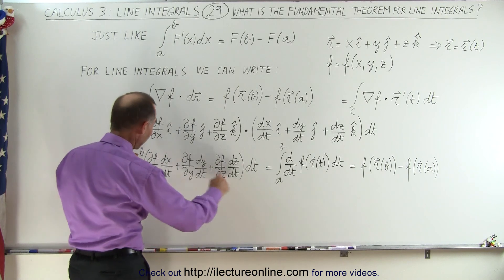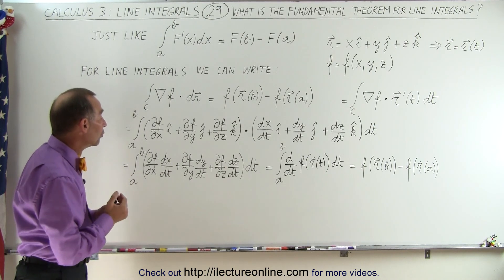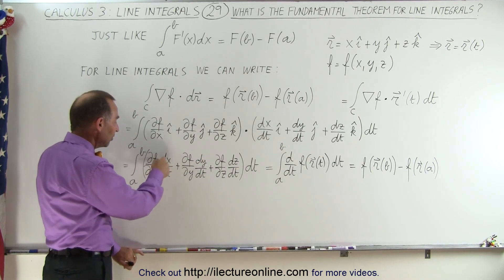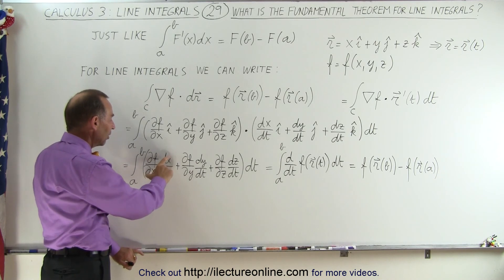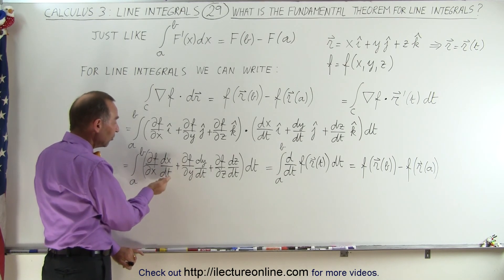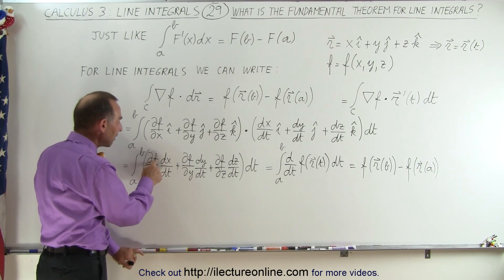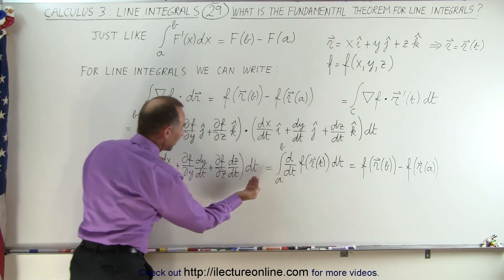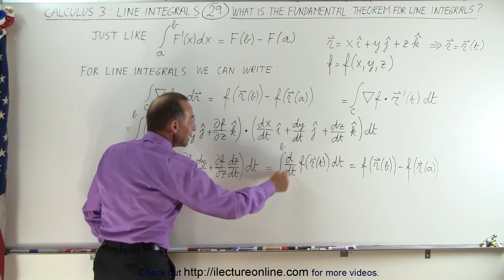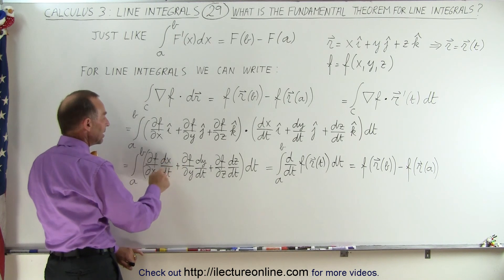What we don't want to do yet is cancel out the dt's, because that would defeat the purpose. What we realize is that since we're writing this in terms of the parametric variable t, the dx terms cancel and we end up with a partial of f with respect to t. But since we now have a single common variable, we no longer need to write it as a partial — we can write it as the derivative of f with respect to t.